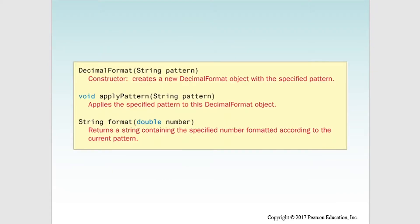Here's the documentation for the DecimalFormat class in the book. They show you the constructor, which takes in a string — the string you're passing in is the pattern of how you want to format your numbers. Then there's a method called applyPattern, which takes in another pattern if you want to change your pattern after creating your object. And they have the format method which takes in a number and outputs a string containing the specified number formatted according to the current pattern.